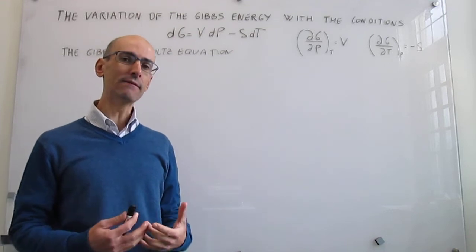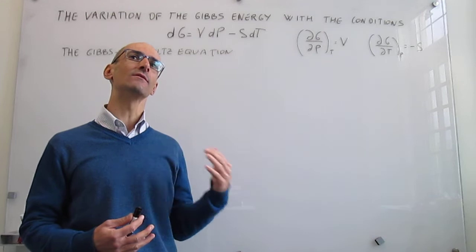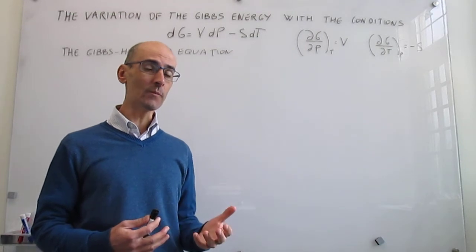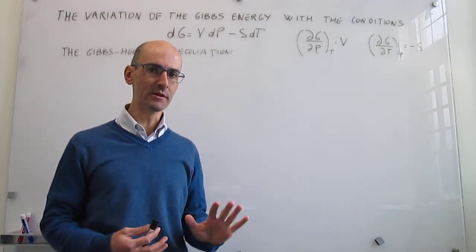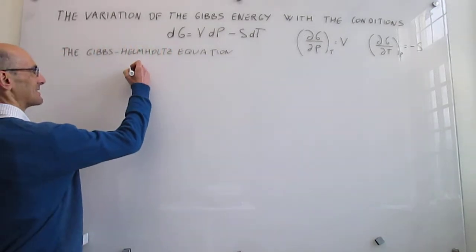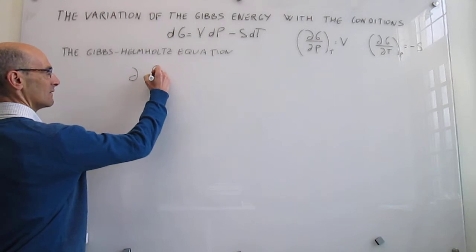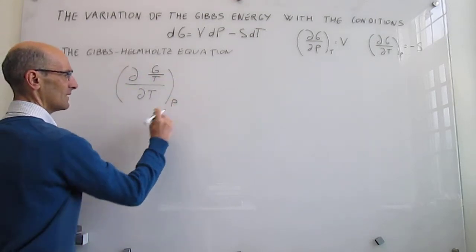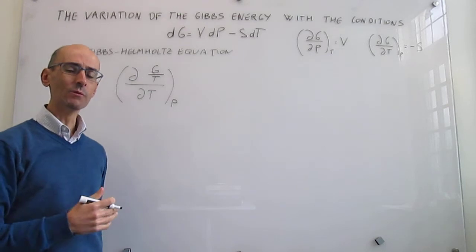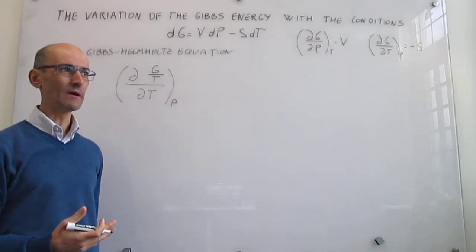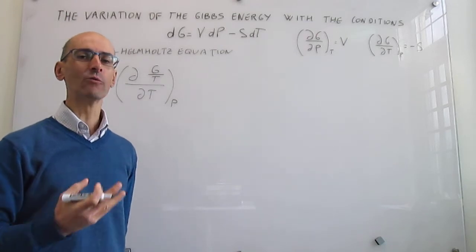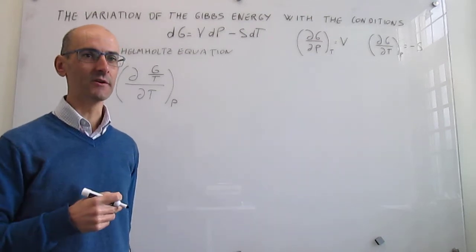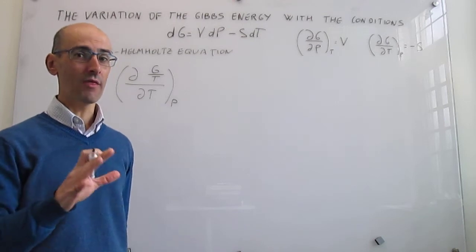We are going to continue to think about the variation of the Gibbs energy with temperature from a slightly different perspective. As we will see in the future, rather than examining the Gibbs energy variation with temperature directly, sometimes it's very useful to examine how the ratio of the Gibbs energy over temperature depends on temperature. This will be very clear when we start to think about concepts like equilibrium constants — it's very common to find a ratio of the Gibbs energy over temperature.